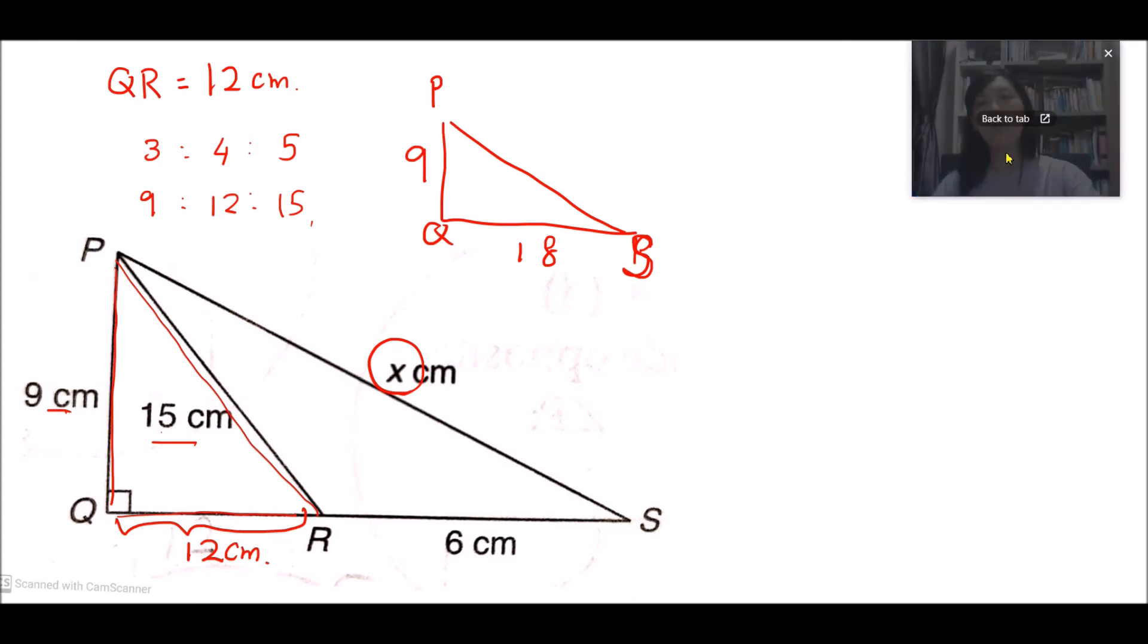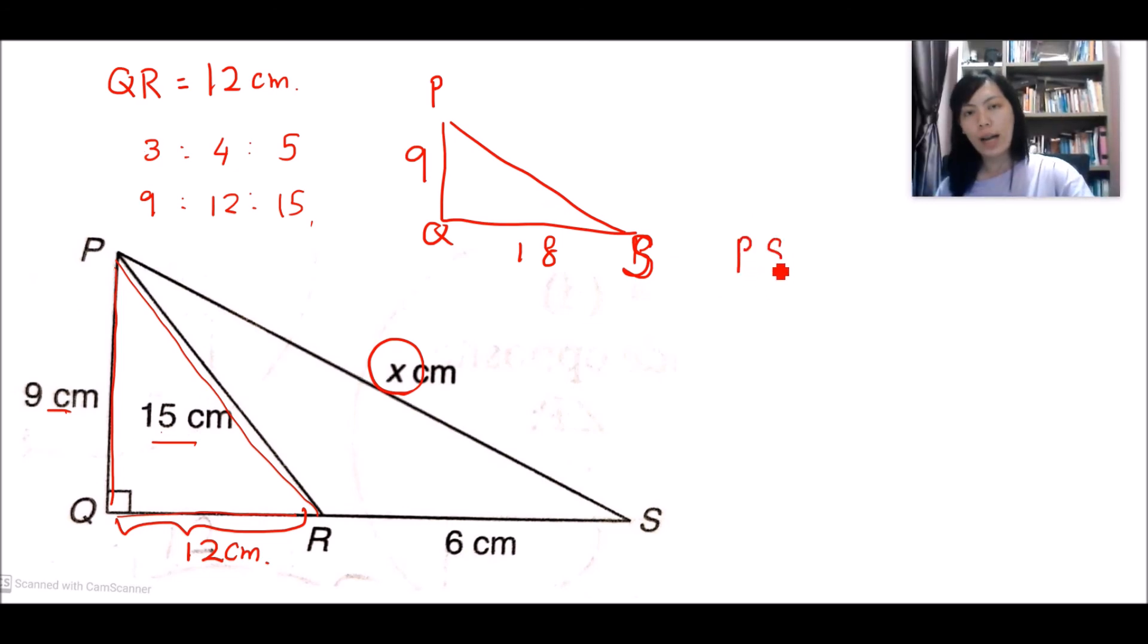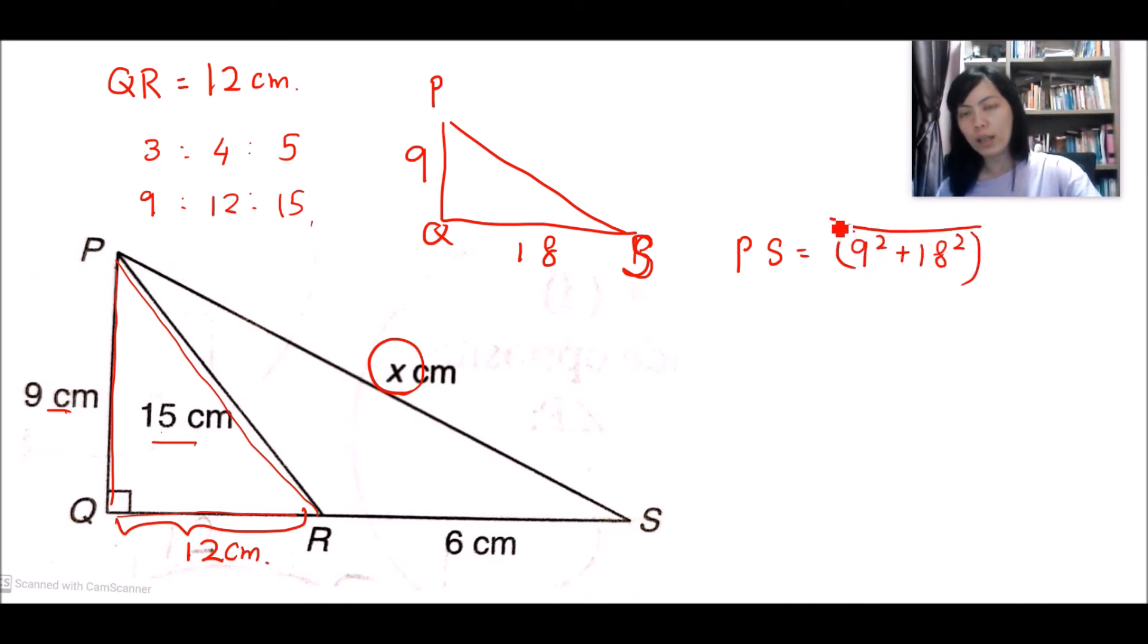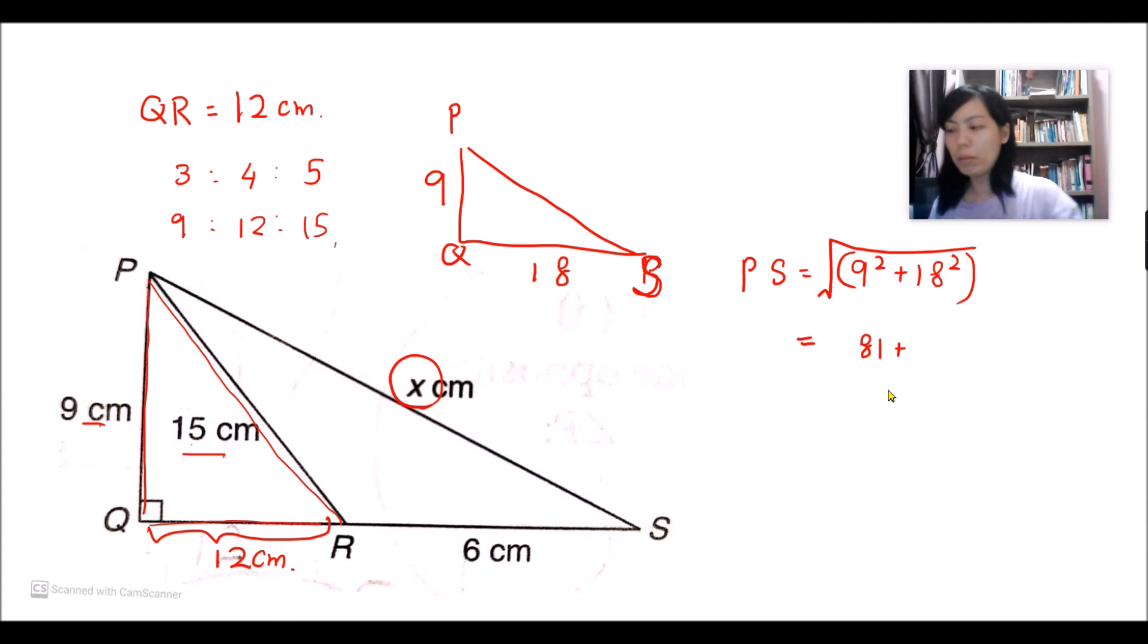So for this one, we have no choice but to solve it by using a calculator. The length of PS is the square root of 9 squared plus 18 squared.